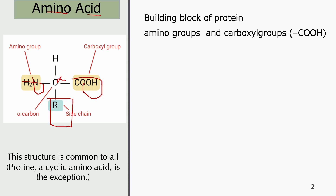This is the common structure for most amino acids, especially those contributing to form proteins. There is an exception, which is proline. Proline is a cyclic amino acid and an exception because it forms a bond with the amino group, which I will discuss later. Amino acids are the building blocks of protein, containing an amino group and a carboxyl group.